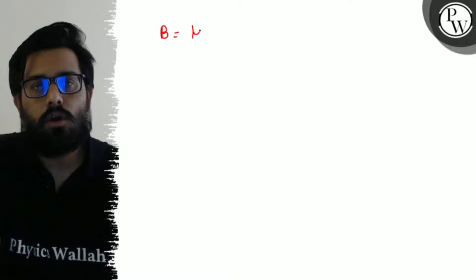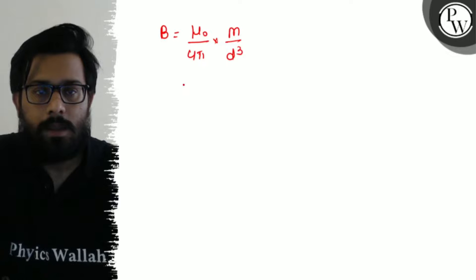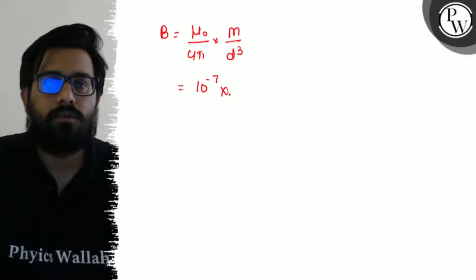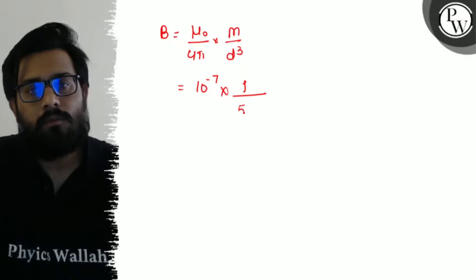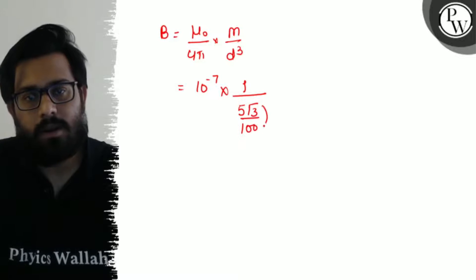So B is equals to mu naught upon 4 pi into capital M by D cube. Mu naught upon 4 pi has value 10 to the power minus 7. Magnetic moment here is one, and d is 5 root 3 centimeters. So 1 upon 5 root 3 in centimeters. Then centimeters to meters is 100 to the power 3.